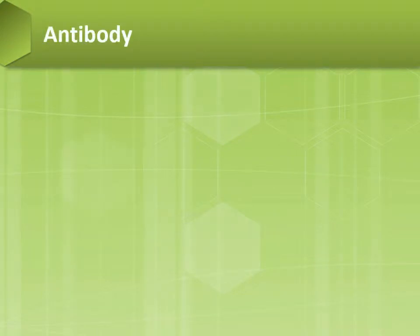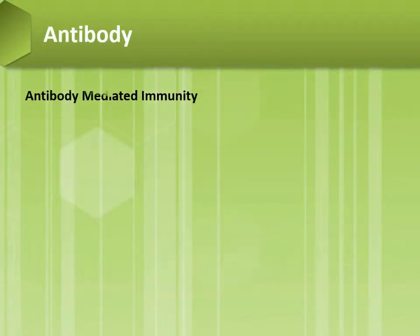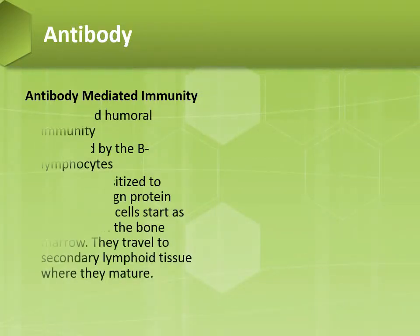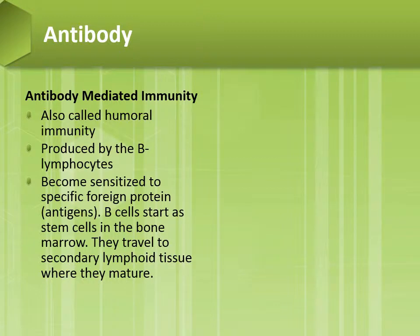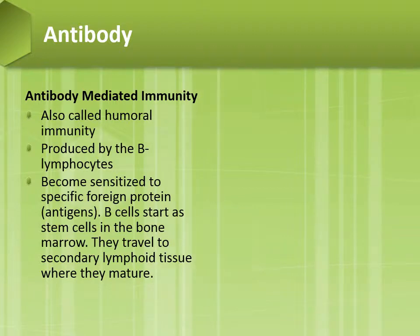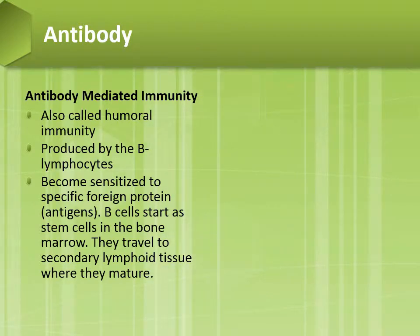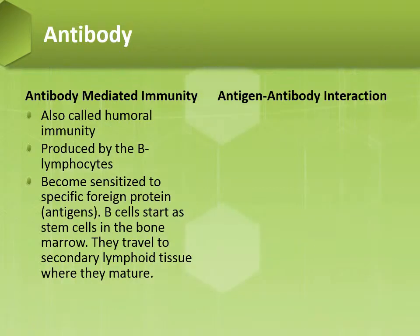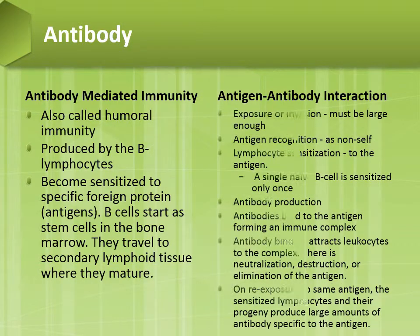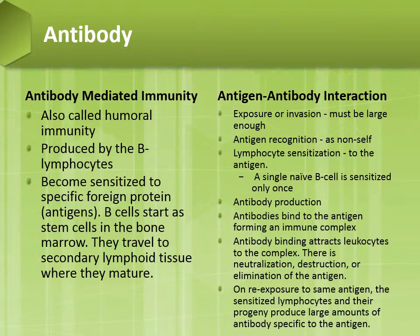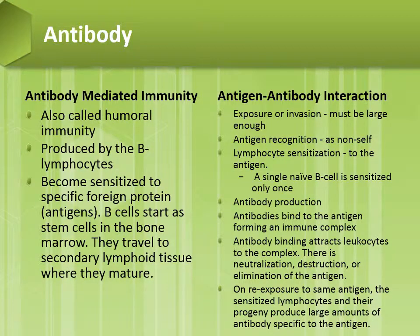Antibody-mediated immunity, also called humoral immunity, is produced by B lymphocytes. B cells become sensitized to a specific foreign protein and start as stem cells in the bone marrow, then travel to secondary lymphoid tissue where they mature. Antigen-antibody interaction is usually due to a large exposure or invasion, and antigen recognition identifies it as a non-self cell, leading to lymphocyte sensitization.